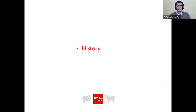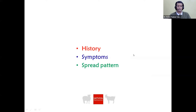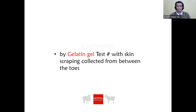Diagnosis is based on history, symptoms, and spread pattern. When a farmer presents a foot rot case, proper history of the flock should be taken — how long animals have been suffering and whether there are cases in other flocks in the same village. The main symptoms are lameness and foul smell. Rapid spread within the flock suggests foot rot, and confirmation can be done by gelatin gel test only.